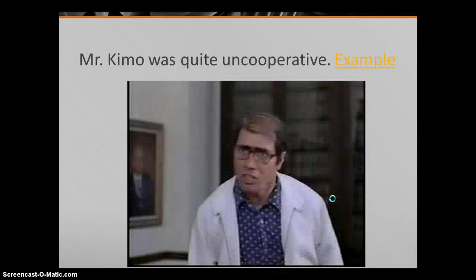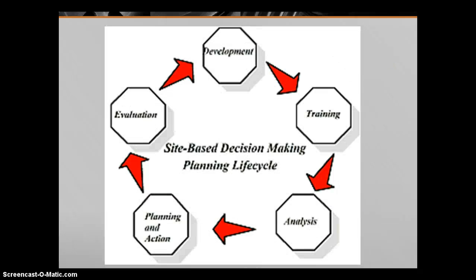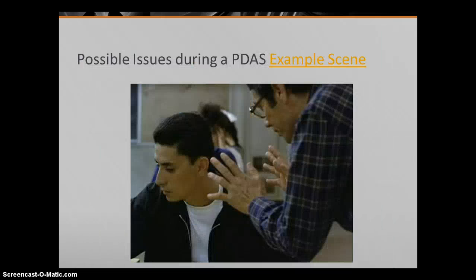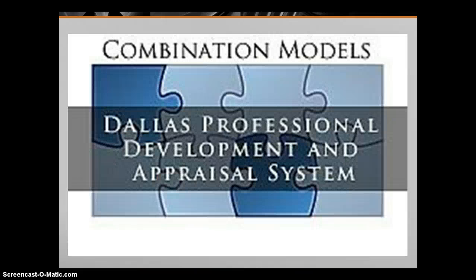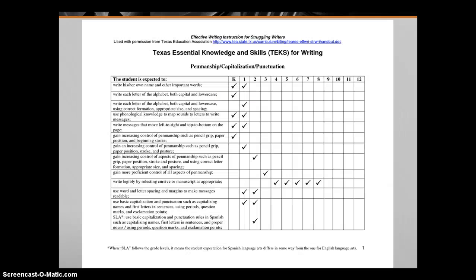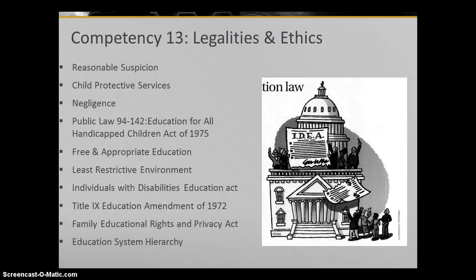As we can see, some of it was quite uncooperative. When it comes to site-based decision-making, there wasn't much — we actually saw more conflict than anything. We didn't hear about a campus improvement plan, there was no continuing education, and during his professional development there were some questionable issues. Sometimes he was more reactive than proactive. When it comes to legalities, under Public Law 94-142, we have some issues.